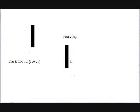They're opposite candles. Dark cloud cover is near the top of a move; piercing is near a bottom of a move. Both of these show caution. If you're in a trade for puts, you might want to get out when you see a piercing. If you're in long or with calls, you might want to think about getting out on dark cloud cover. Or it's a good entry point. But always wait for confirmation on these candles — meaning you want to see another down day confirming the dark cloud, or another up day confirming the piercing.